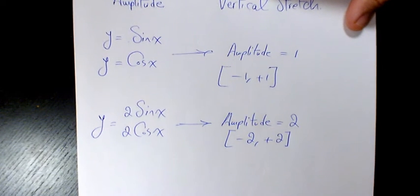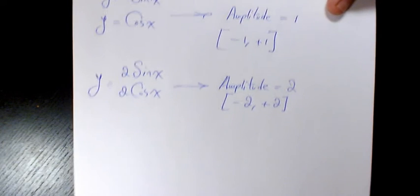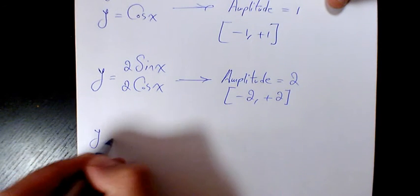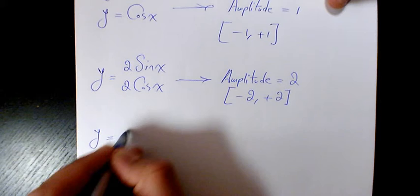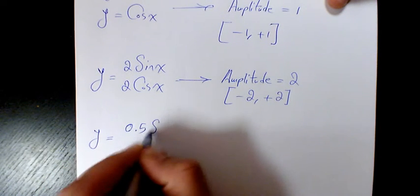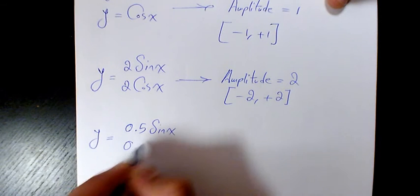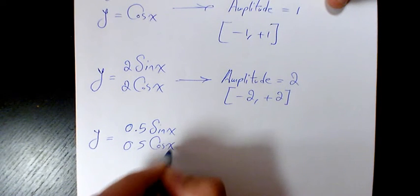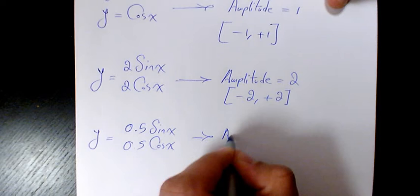Now next one, let's say if we have something smaller than one, so 0.5 sine X, 0.5 cosine X. In this case amplitude is 0.5, so we have vertical compression this time because the coefficient is less than one.